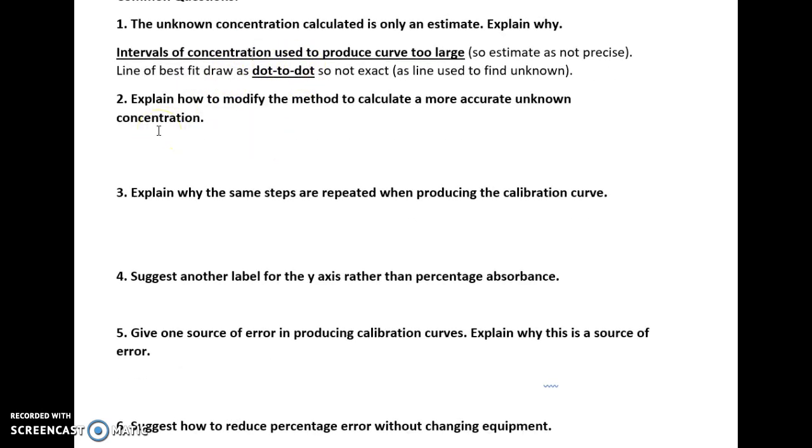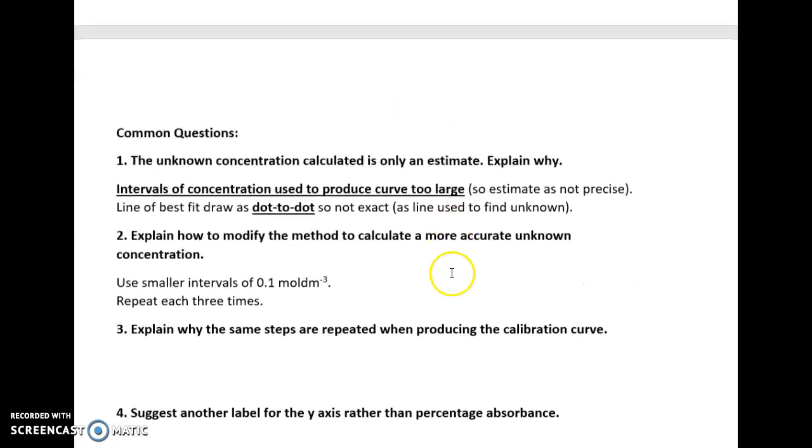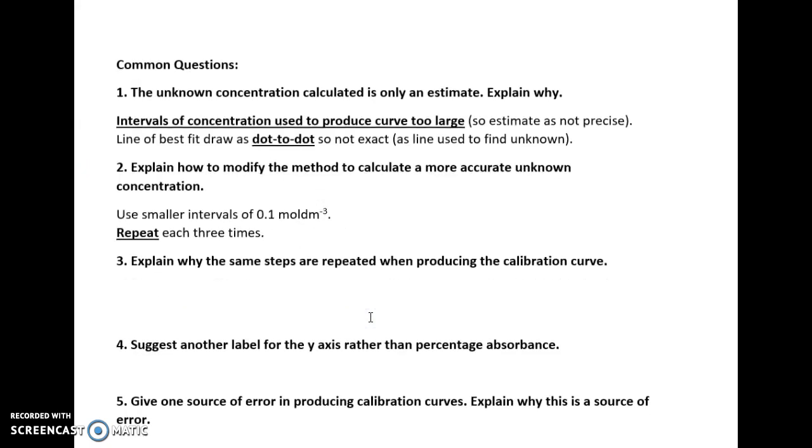Explain how to modify the method to calculate a more accurate unknown concentration. Well, what we can do is we can use smaller intervals. So if we look back at here, the concentration went up by 10 in this picture here, but we can change that. Then the concentration go up by 0.1 moles per decimeter cubed, and we can do repeats. So by doing a repeat, we can work out a mean, and that will be more accurate if we're repeating it.